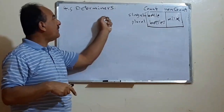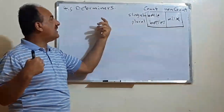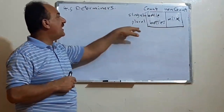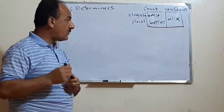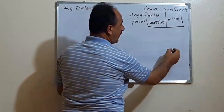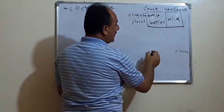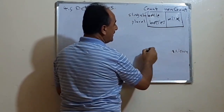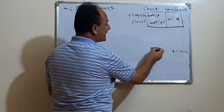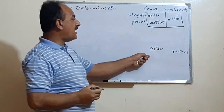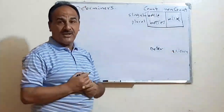So, determiners are words or expressions that precede the noun and tell us what comes after them. We know that any noun is mostly preceded by what we call a determiner. These determiners do not necessarily come directly before the noun.